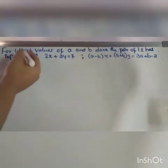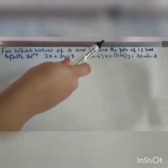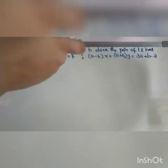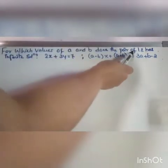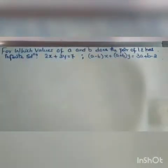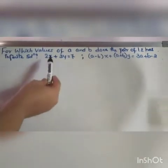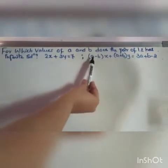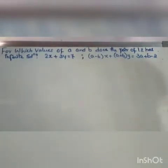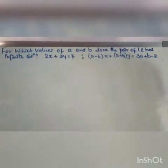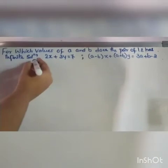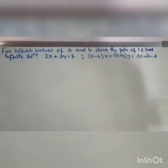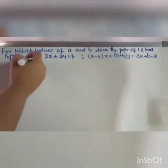The question is: for which values of a and b does a pair of linear equations have infinite solutions? The equations given are 2x + 3y = 7, and (a − b)x + (a + b)y = 3a + b − 2. We need to find when this system has infinite solutions.